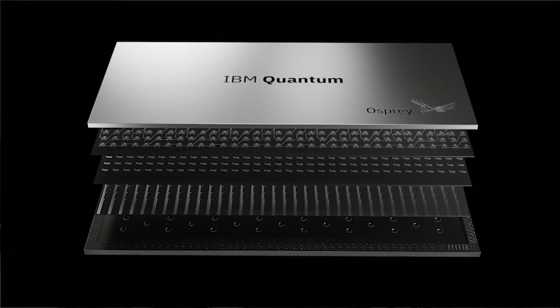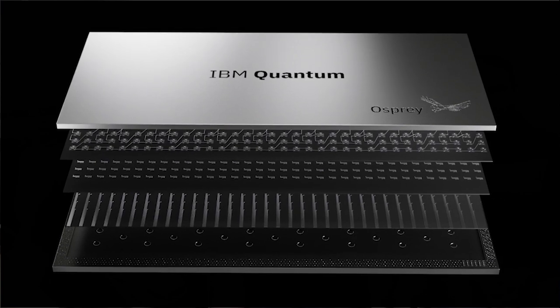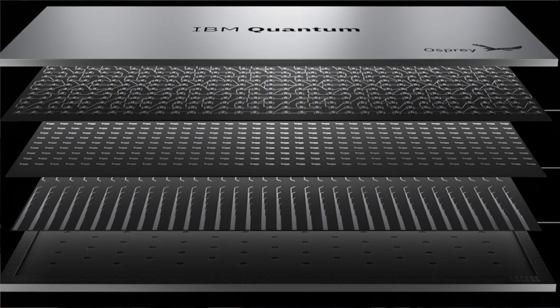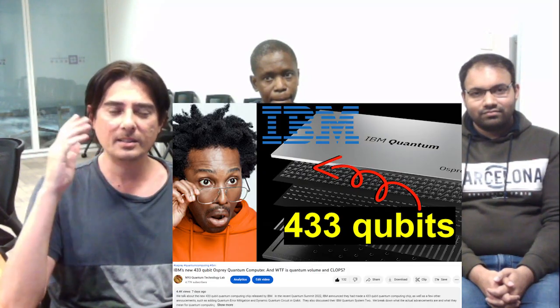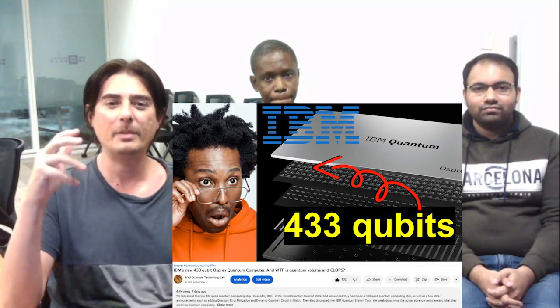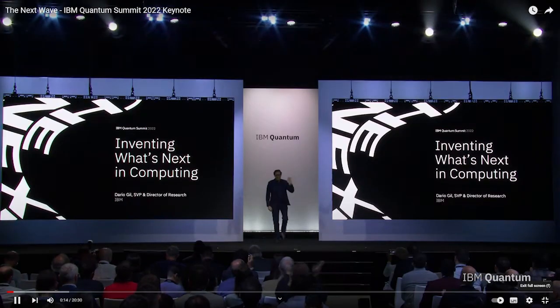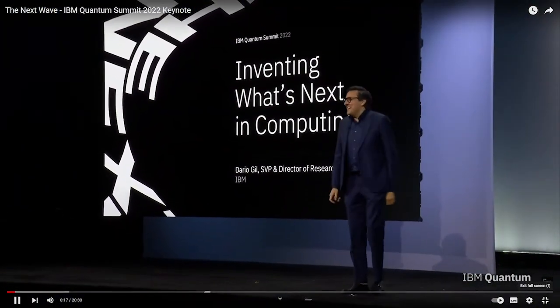About a week ago, IBM released their new Osprey processor, a 433 qubit quantum chip. If you haven't checked out our video yet, there hasn't really been much in terms of actual details of this processor. But several days after we did this video, IBM came out with this new quantum State of the Union address, and they had a few more details on the processor and other further developments.